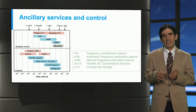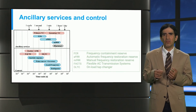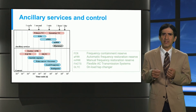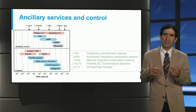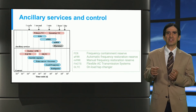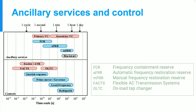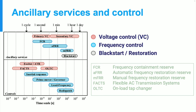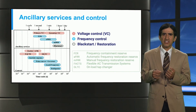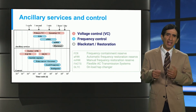Let's now visualize the different kinds of controls which can cope with different types of stability phenomena at different time scales. In the figure, there are two main types of controls: voltage controls and frequency controls. In addition, there are ancillary services which deal with restoring a system after a blackout.